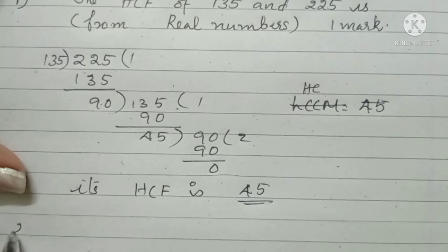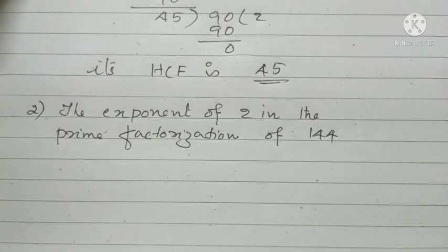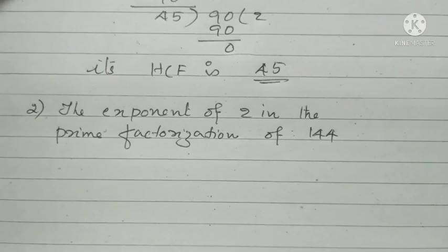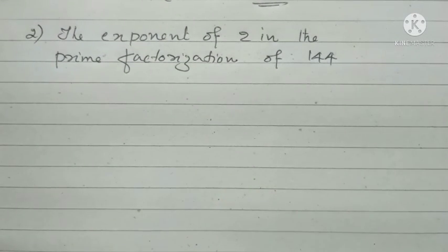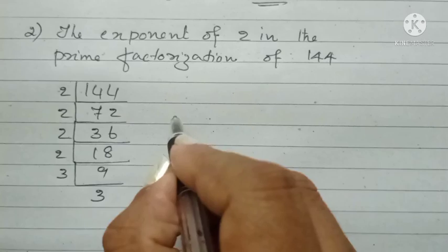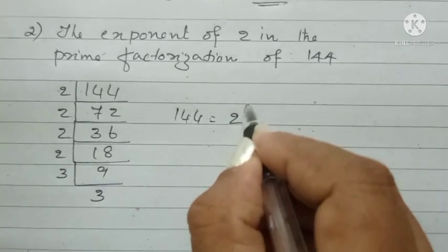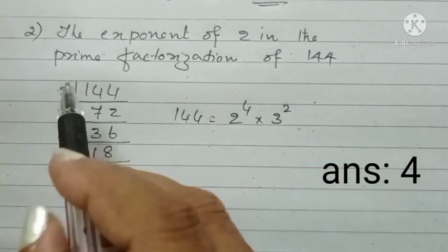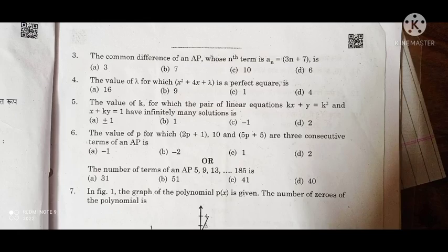The second question is: The exponent of 2 in the prime factorization of 144. By prime factorization, we can write 144 as 2 raised to 4 into 3 raised to 2. 1, 2, 3, 4. Therefore, the exponent is 4.